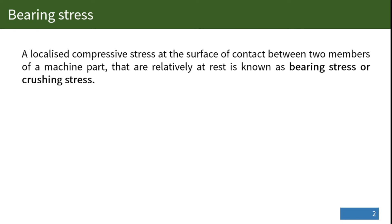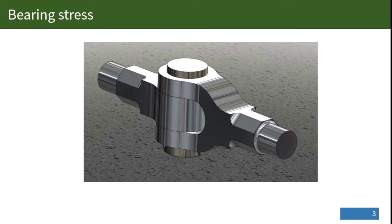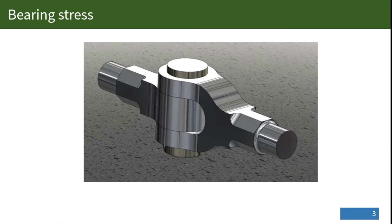There are a few examples of machine elements that are subjected to bearing stress. One of these is a knuckle joint. You can see a knuckle joint here — this is the knuckle pin placed here, and the rods are subjected to tensile loads, so this area is subjected to bearing stress.